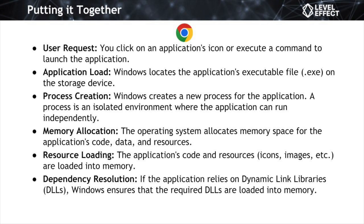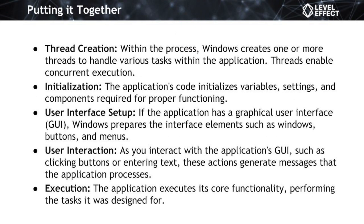Then we have memory allocation: to support the application's execution, the operating system allocates a portion of the computer's memory for the application. This memory space stores the application's code, data, and other resources it needs. Next is resource loading, where the operating system loads the application's code and associated resources into the allocated memory space — including graphical assets like icons and images, as well as any other data required for the application to function. Then dependency resolution: if the application relies on external resources known as DLLs, the operating system ensures the necessary DLLs are also loaded into memory, since they contain reusable code the application needs.